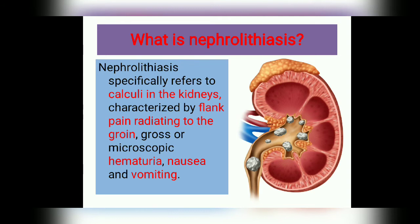In nephrolithiasis, both gross hematuria and microscopic hematuria can occur. This depends on the size of the stone, its site, and its type. Also note that red urine does not necessarily mean hematuria — there are many other conditions that can cause red urine. Additionally, nausea and vomiting occur due to the irritation caused by the stone. Flank pain, hematuria, nausea and vomiting are the symptoms that suggest nephrolithiasis.